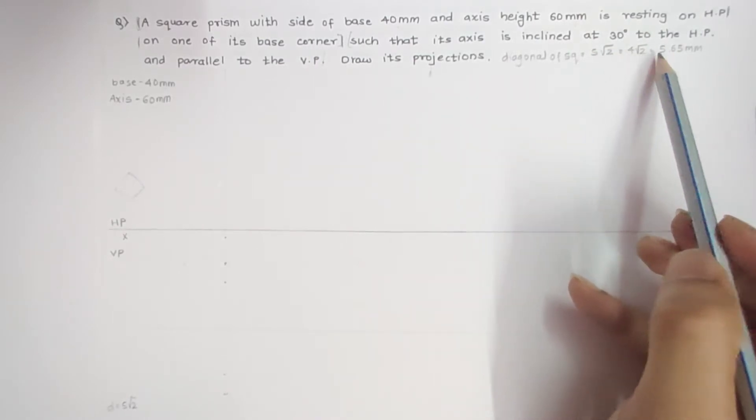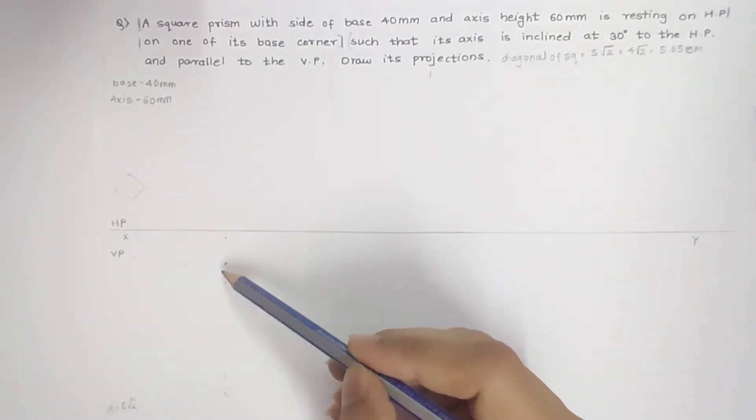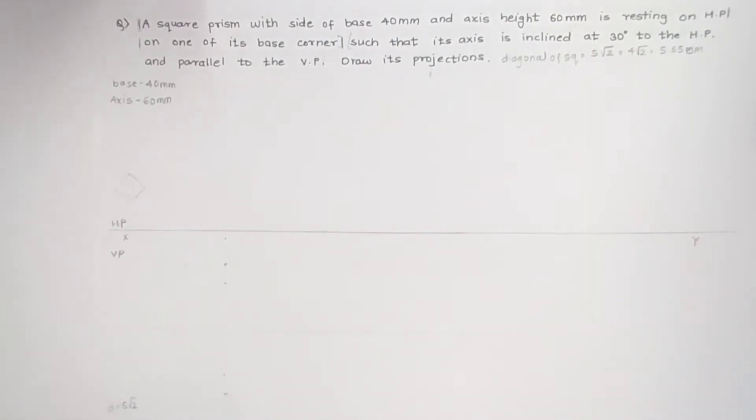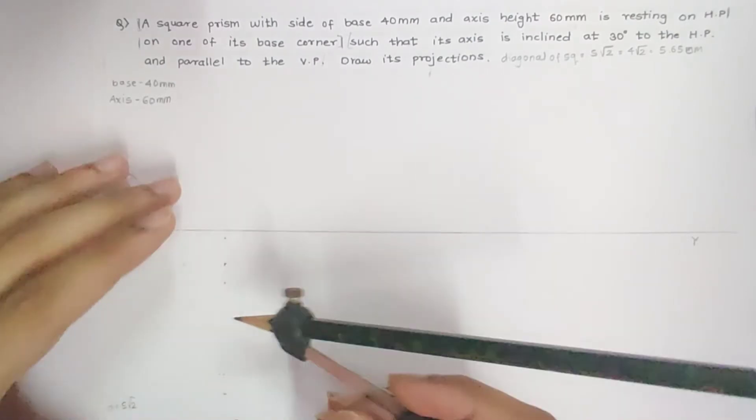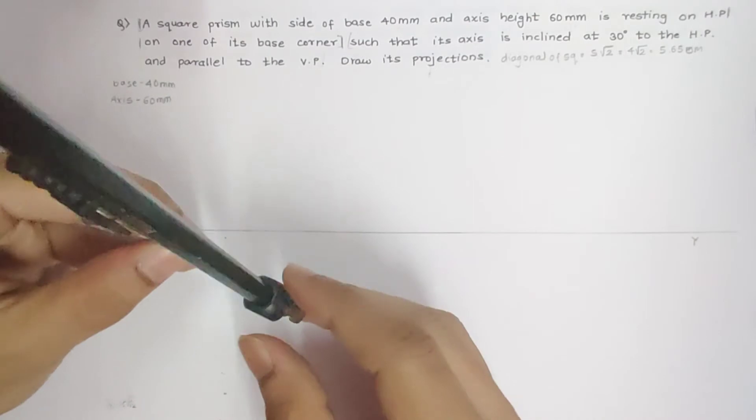First I will draw 5.65 on this line, which I have put already over here. From these two points I will mark 4 centimeters and put it over here.